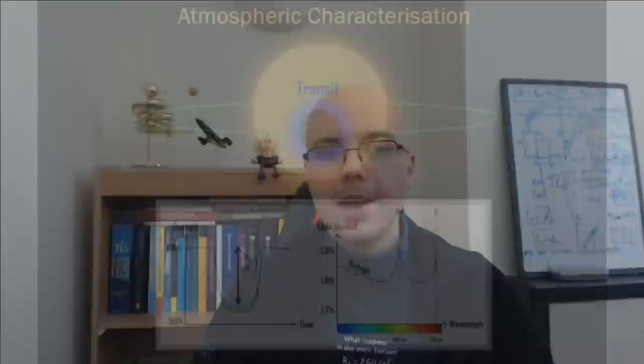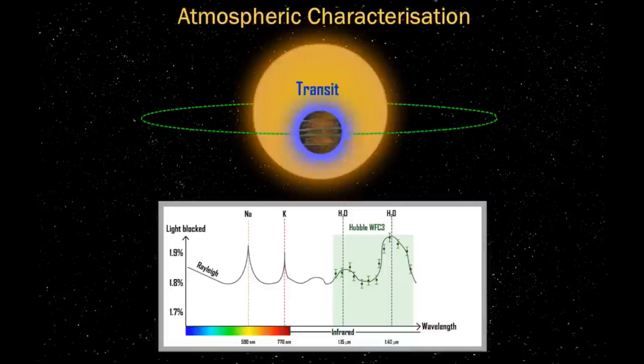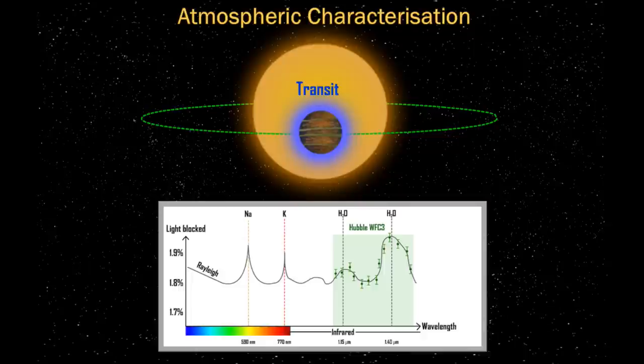But if you want to know what's really going on, you can go beyond the visible wavelengths and push outwards into longer wavelengths in the infrared. Molecules such as water (H₂O) absorb quite strongly in the infrared. What I'm showing here is the range of wavelengths that the Hubble Space Telescope can currently observe in the infrared using an instrument called the Wide Field Camera 3, or WFC3.